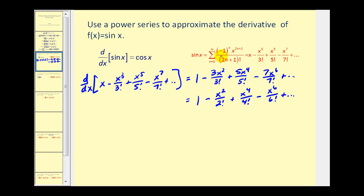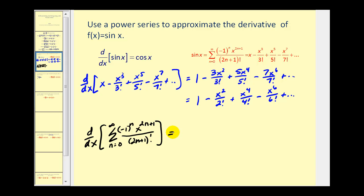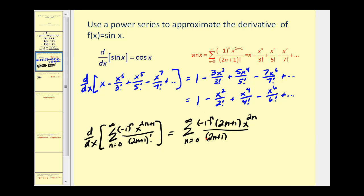Now let's find the derivative of this summation with respect to x. The negative one to the power of n will not be affected by finding the derivative. To find the derivative of the x term, we get two n plus one times x to the two n plus one minus one, or x to the two n, with a denominator of two n plus one factorial. Remember that equals two n plus one times two n factorial, so we can simplify a factor of two n plus one. The derivative is therefore the summation from n equals zero to infinity of negative one to the n times x to the two n divided by two n factorial.